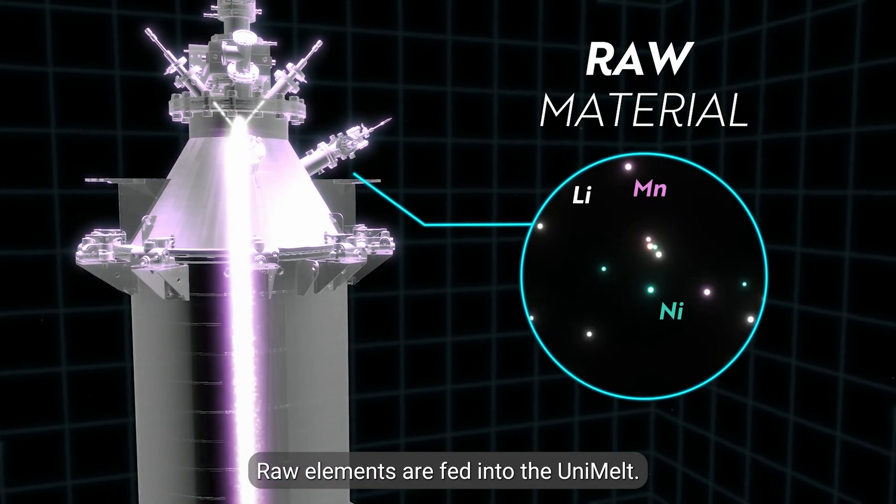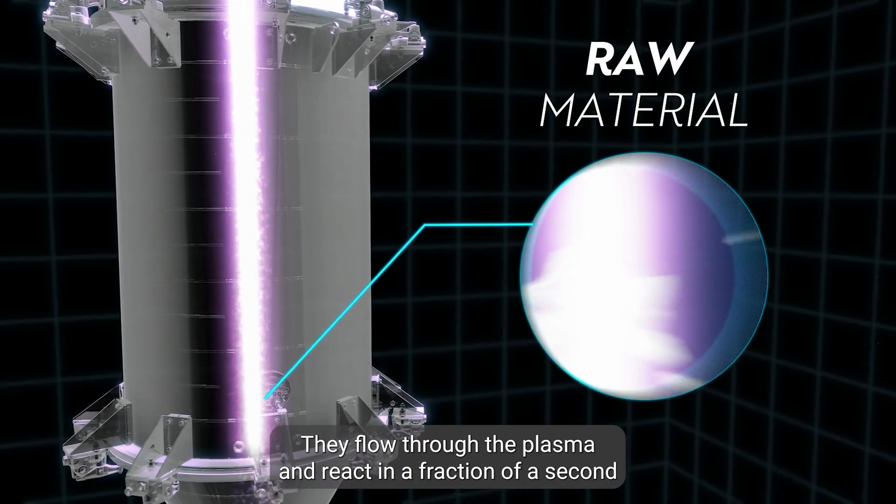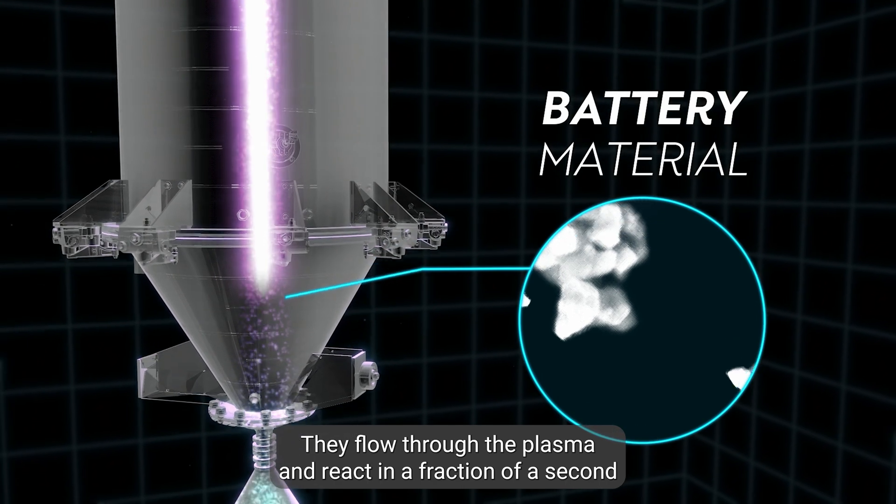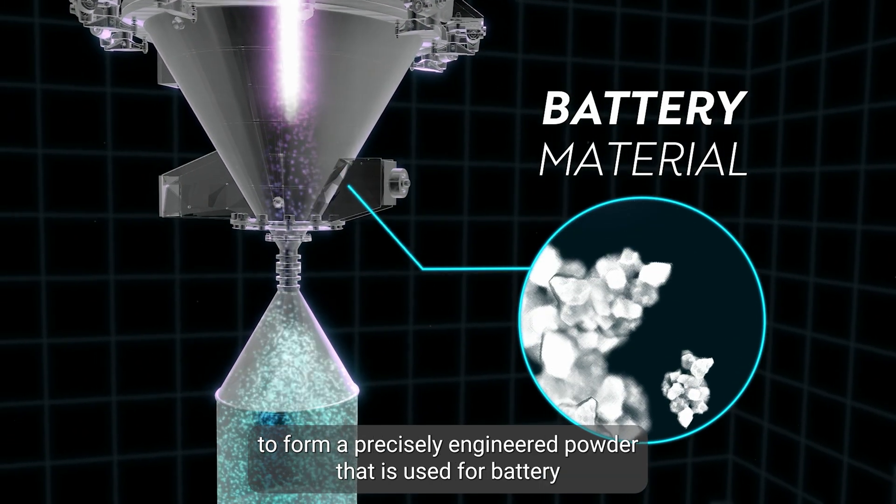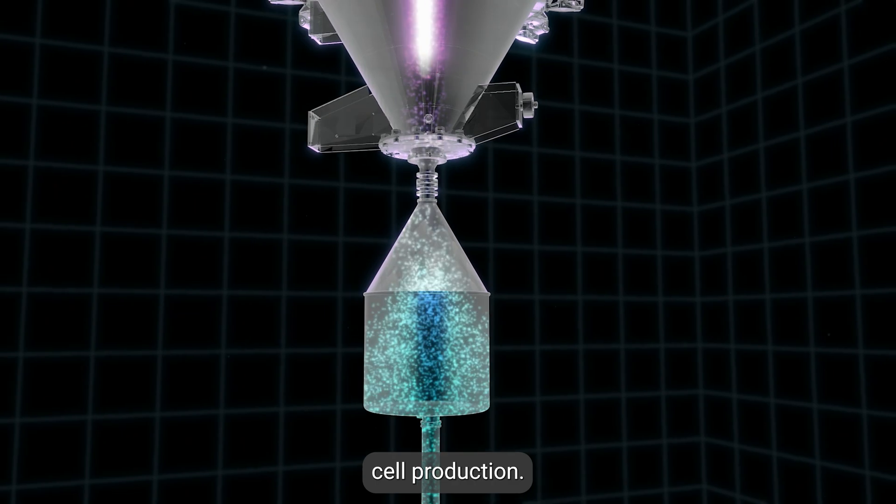Raw elements are fed into the Unimelt. They flow through the plasma and react in a fraction of a second to form a precisely engineered powder that is used for battery cell production.